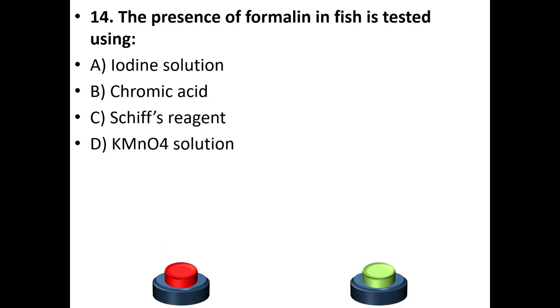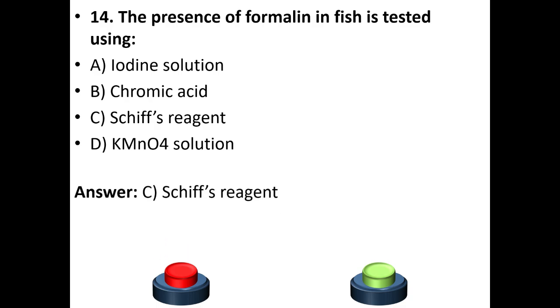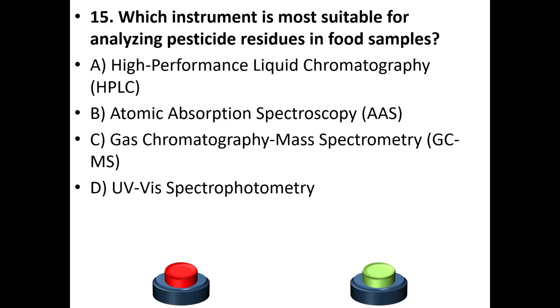Fourteenth question: The presence of formalin in fish is tested using — A. Iodine solution. B. Chromic acid. C. Schiff's reagent. D. Potassium permanganate solution. Your answer is option C: Schiff's reagent.